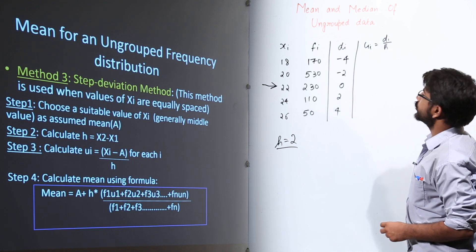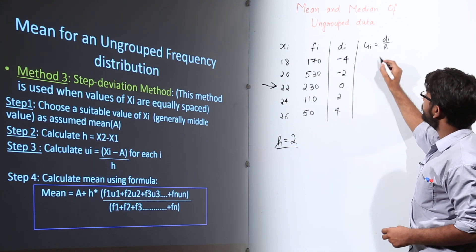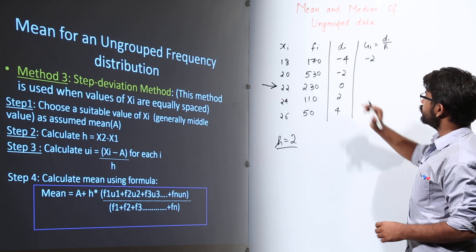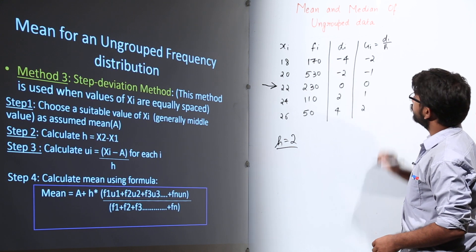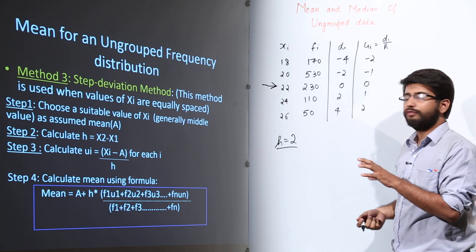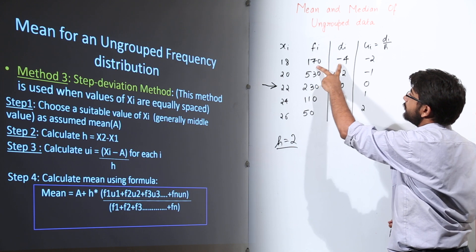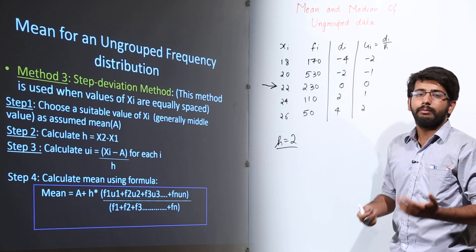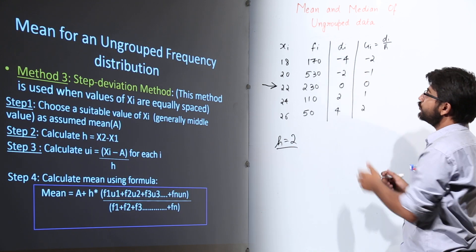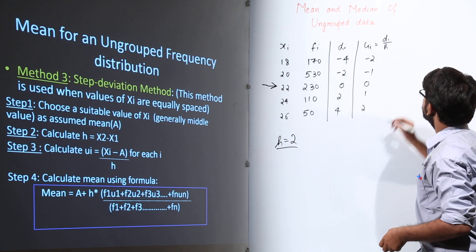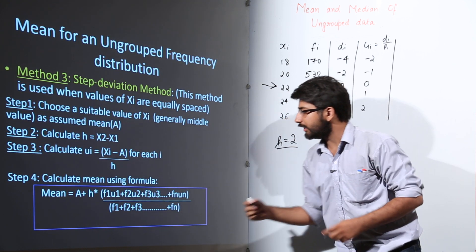Step 3: calculate UI = DI / H. So: −4 / 2 = −2, −2 / 2 = −1, 0 / 2 = 0, 2 / 2 = 1, and 4 / 2 = 2. We have reduced the DI values further. It is difficult to compute 170 × (−4), but much easier to compute 170 × (−2) — this is the benefit of the Step Deviation Method over the Assumed Mean Method.